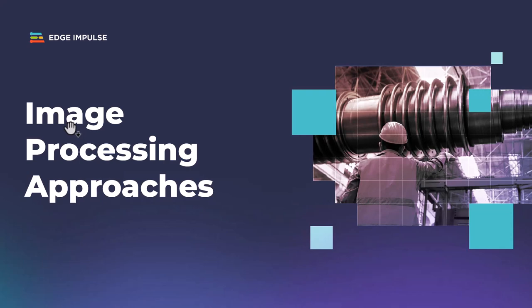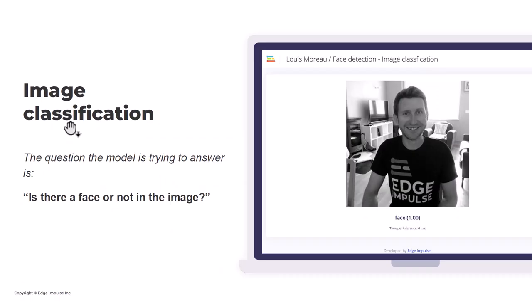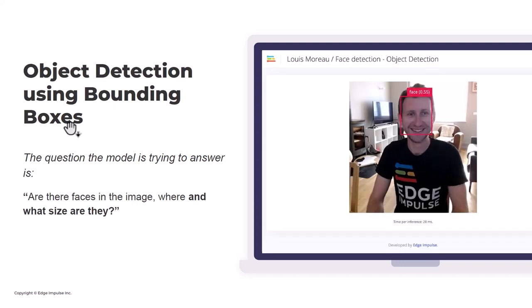I'm going to give a bit of context about the image processing approaches that we support on the studio. First, image classification — that's basically binary classification. The question the model is trying to answer is: is there a face in the image or not? Is it a dog or a cat? That's a default model that works great, but we don't have any information about the location of the face, nor can we count the number of objects using image classification.